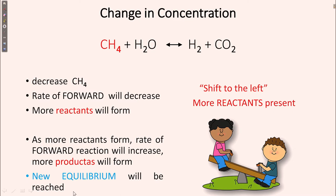If a change in concentration occurs in the product part, then what will happen? A decrease in methane means the rate of forward reaction will decrease, then more reactants will form — that means this will shift to the left direction. As more reactants form, the rate of forward reaction will increase, more products will form, and then new equilibrium will be reached.